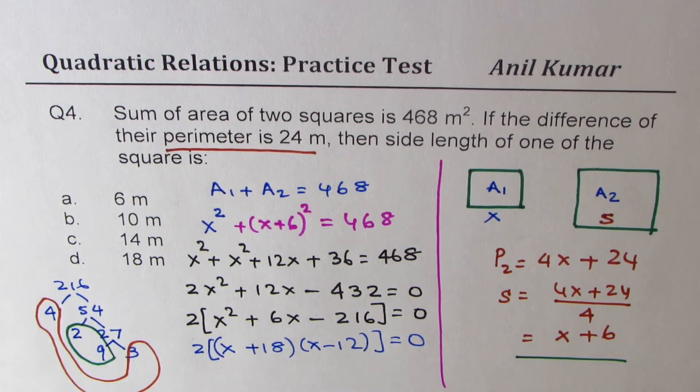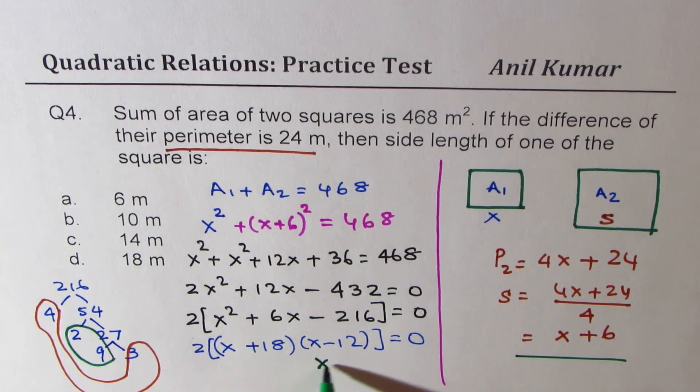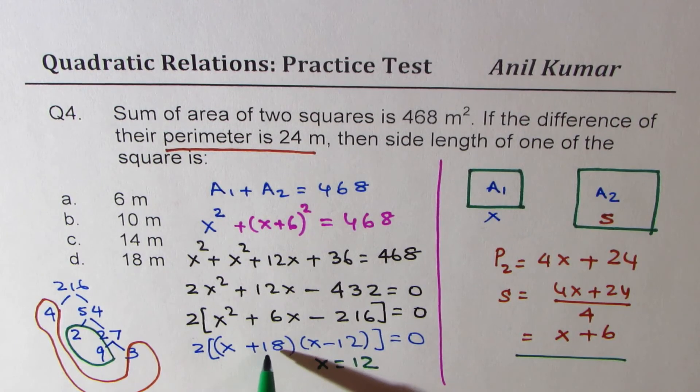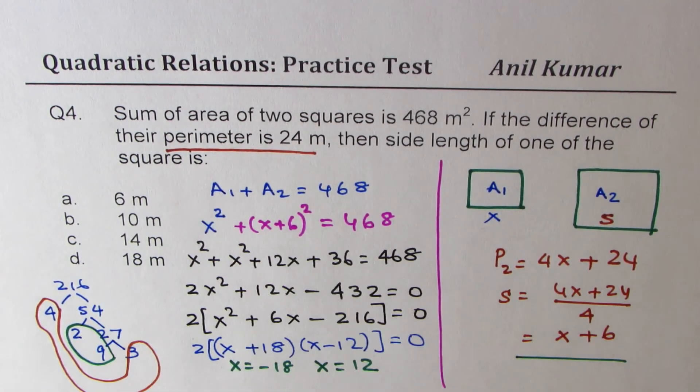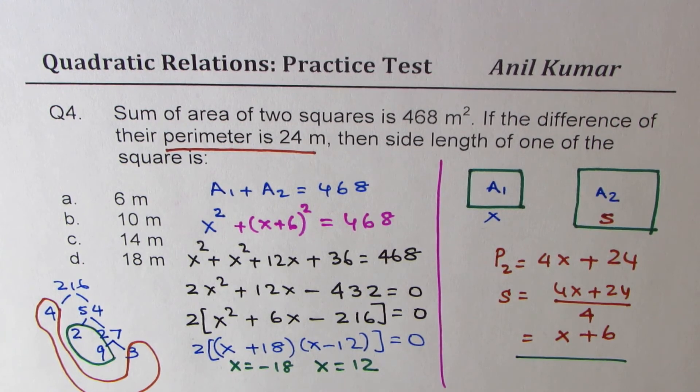So that gives you one real solution, which is x equals to 12. The other one in this case is minus 18. But 12 is not the option. So that means we are given here the dimensions of bigger square, not the smaller one.